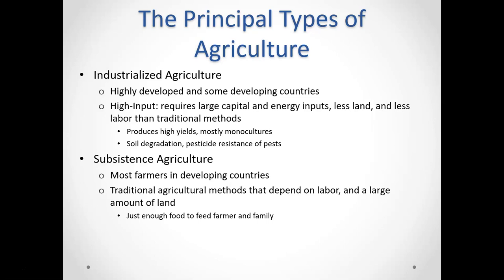Even within industrialized agriculture there's room for discussion of agribusinesses versus family farms. But the big idea is that agriculture in highly developed countries typically requires a large amount of inputs — energy, land, water — all things needed to grow crops. You're typically using what you grow not just to support your family but selling it, making money off it. Hopefully, if they've had a good year. That is different from subsistence agriculture.